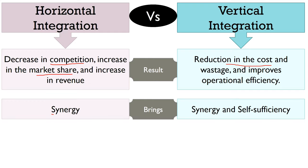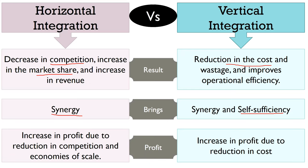Horizontal integration brings synergy — meaning the combined result of the two firms will be higher in comparison to the sum of their individual results. On the other hand, vertical integration brings both self-sufficiency and synergy. Self-sufficiency is gained when all the operations are performed internally. Lastly, in horizontal integration the increase in profit is due to reduction in competition and economies of scale, whereas in vertical integration the increase in profit is due to reduction in cost.